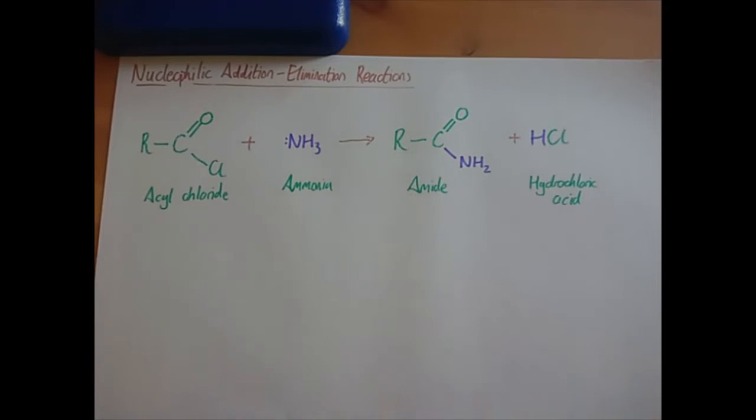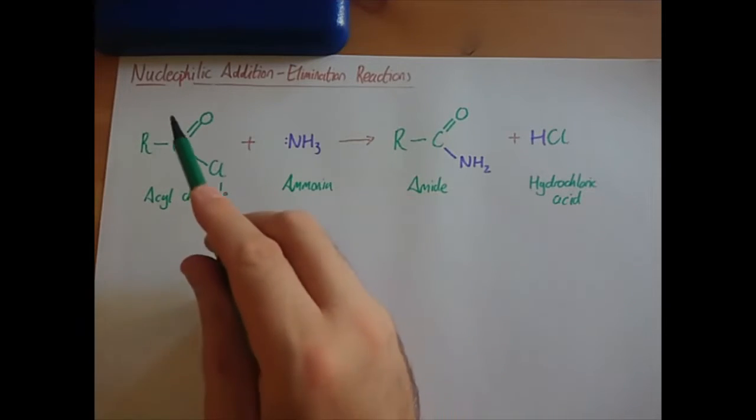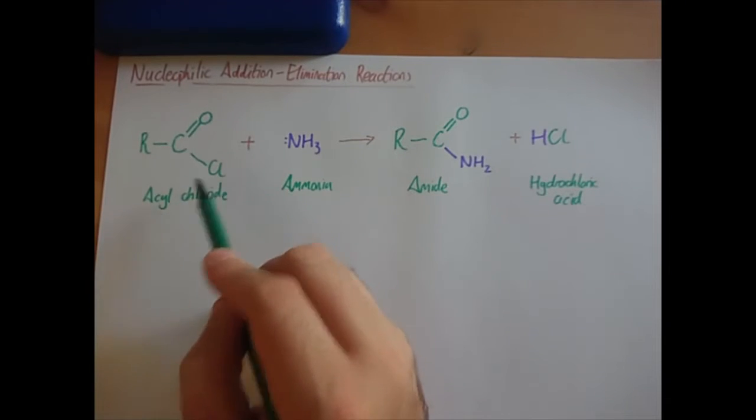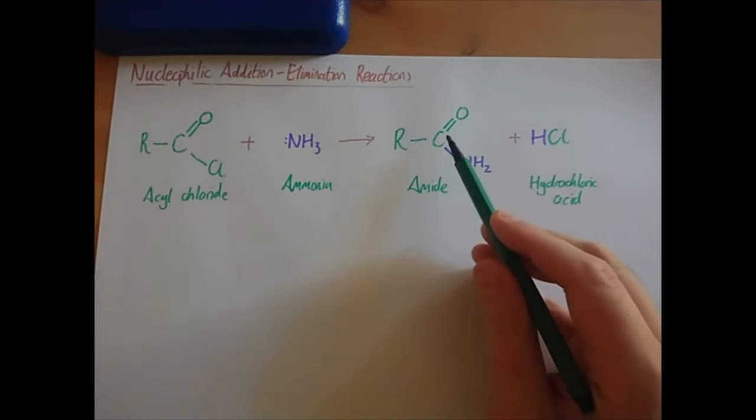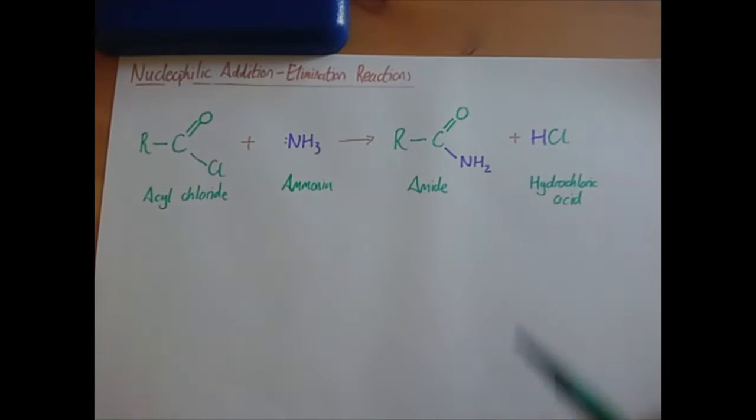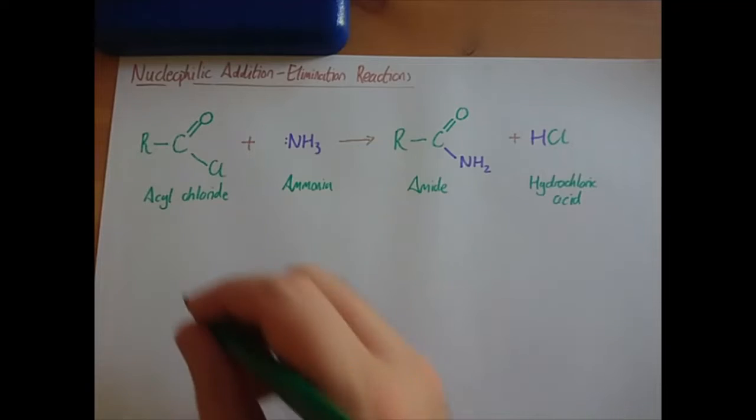So we've got the main reaction up here: your acyl chloride reacts with ammonia to produce an amide and hydrochloric acid. The acyl chloride group - carbon double bond to the oxygen, single bond to the chlorine. Amide group - carbon double bond to the oxygen, single bonded to a nitrogen, in this case bonded to hydrogens. So let's go for the mechanism.